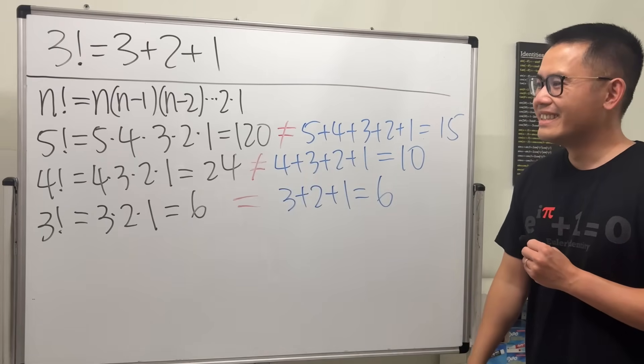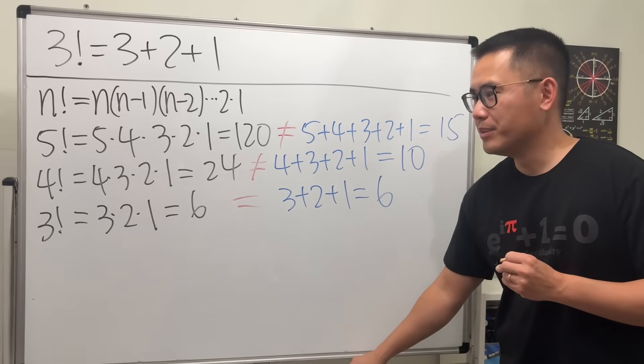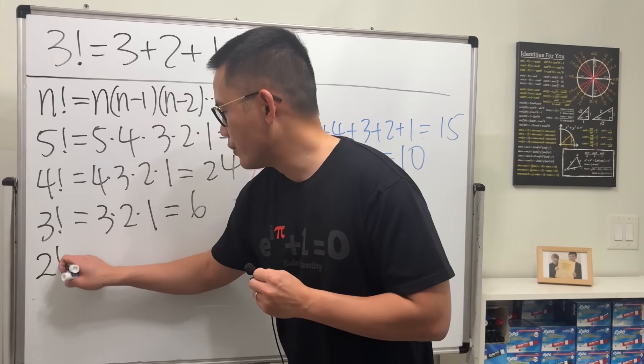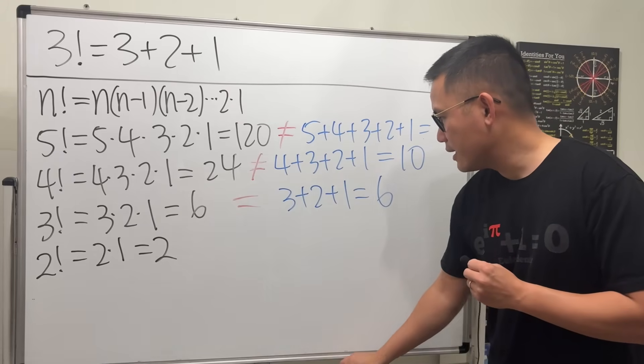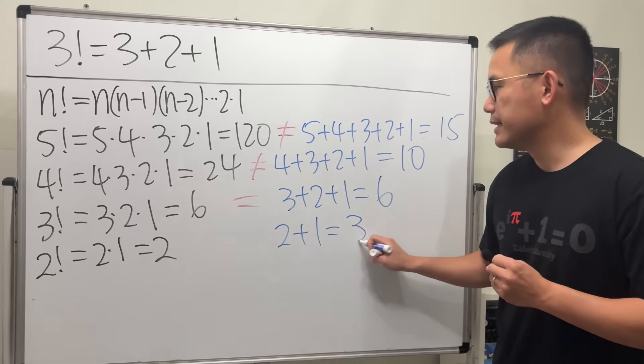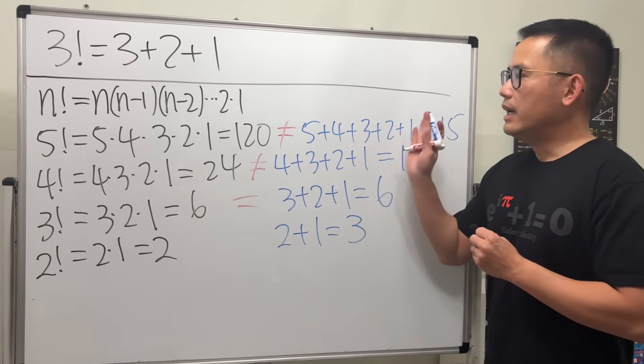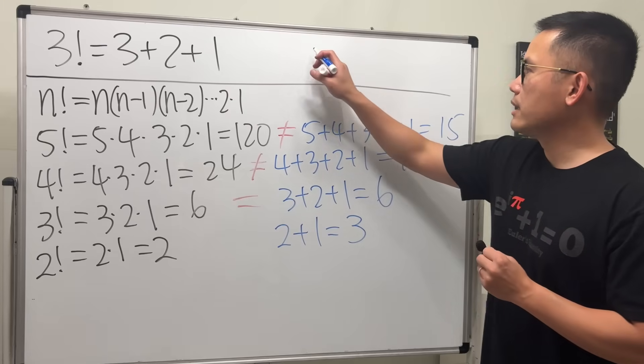So it only works for 3 factorial. If you try another one, 2 factorial means 2 times 1, which is 2. But if you try 2 plus 1, that's 3. They're not equal. In fact, this addition pattern has a name: it's called the triangular number.